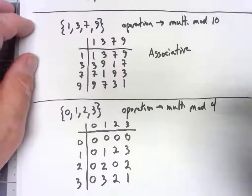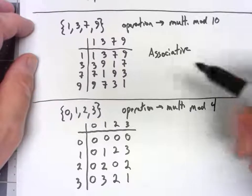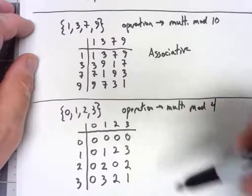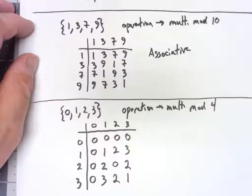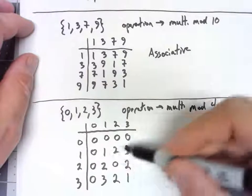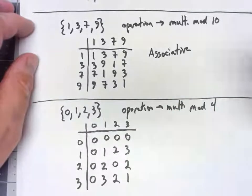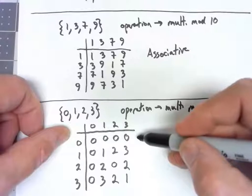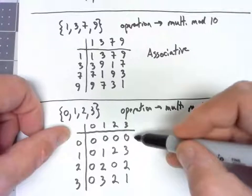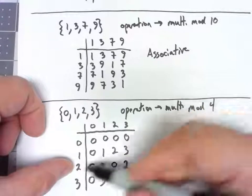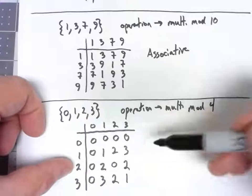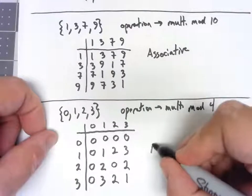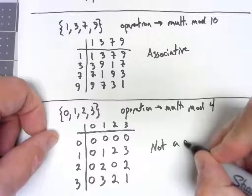Now, this is not a group. This operation is associative. It does have an identity. 1 is an identity. But not everything has an inverse. 0, there's nothing I can multiply it by to get 1. Same thing with 2. There's nothing I can multiply it by to get 1 under this operation. So this is not a group.